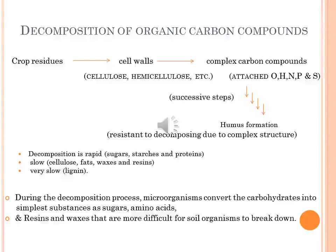Crop residues contain many complex carbon compounds originating from cell walls — cellulose and hemicellulose. Chains of carbon with each carbon atom linked to others form the backbone of organic molecules. These carbon chains, with varying amounts of attached oxygen, hydrogen, nitrogen, sulfur and phosphorus, are the basis of both simple sugars and amino acids and more complicated long-chain or ring molecules. Depending on chemical structure, decomposition is rapid for sugars, starches and proteins, slow for cellulose, fats, waxes and resins, and very slow for lignin.